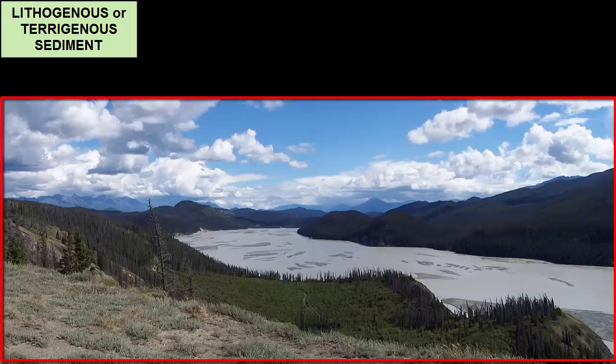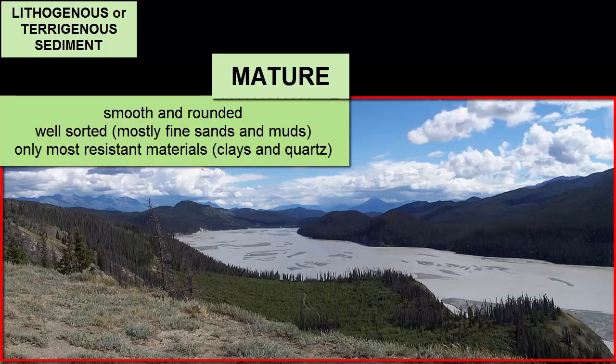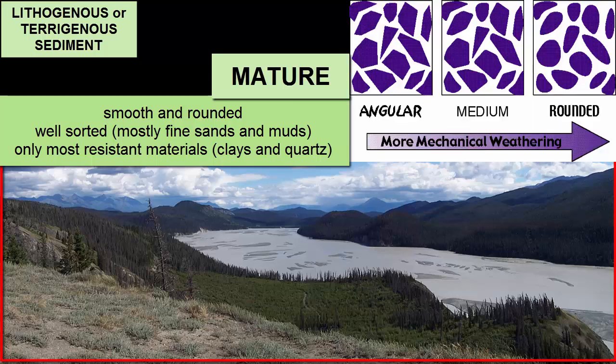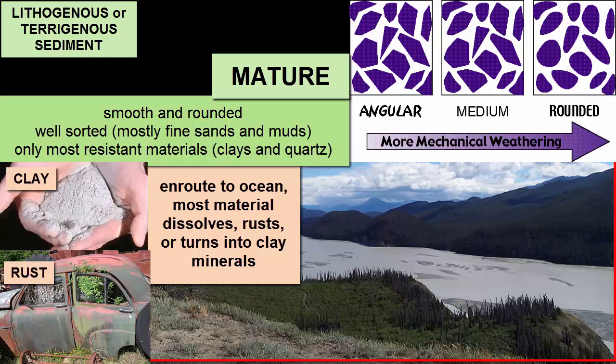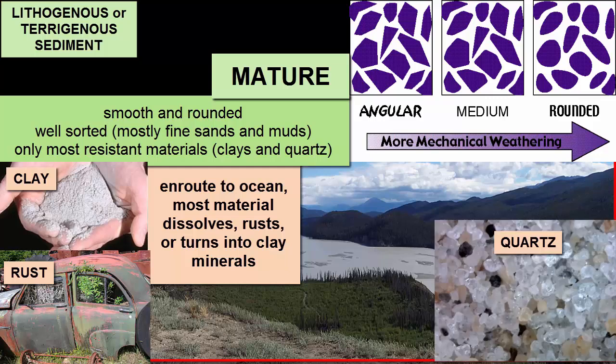When lithogenous sediment is carried by rivers, on the other hand, it becomes mature. Grains decrease in size to fine sands and muds. During transit, the grains are knocked around and hit each other, physically breaking down into smaller pieces. They also break down chemically — most of the material dissolves or is turned into clays and rust. The most resistant materials, predominantly quartz grains, which don't dissolve or turn into clay or rust, remain.